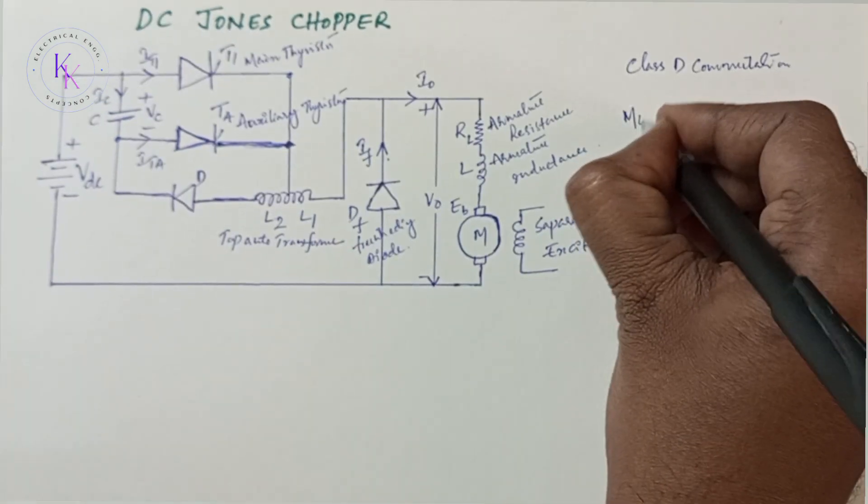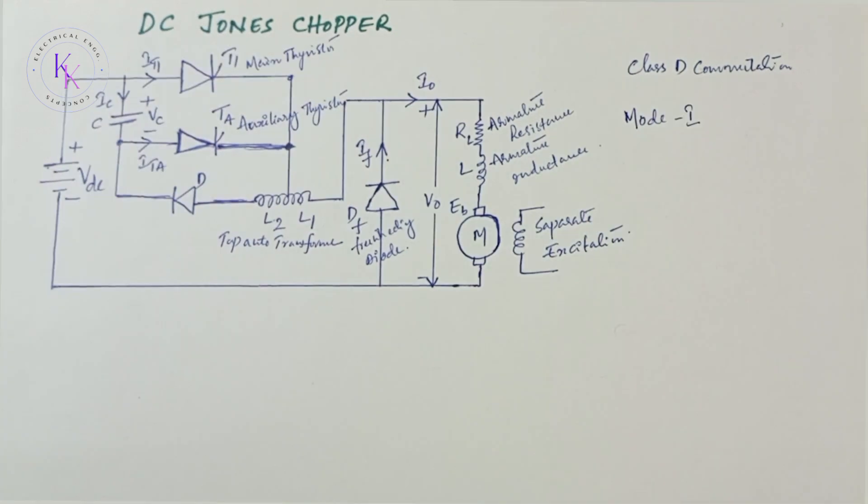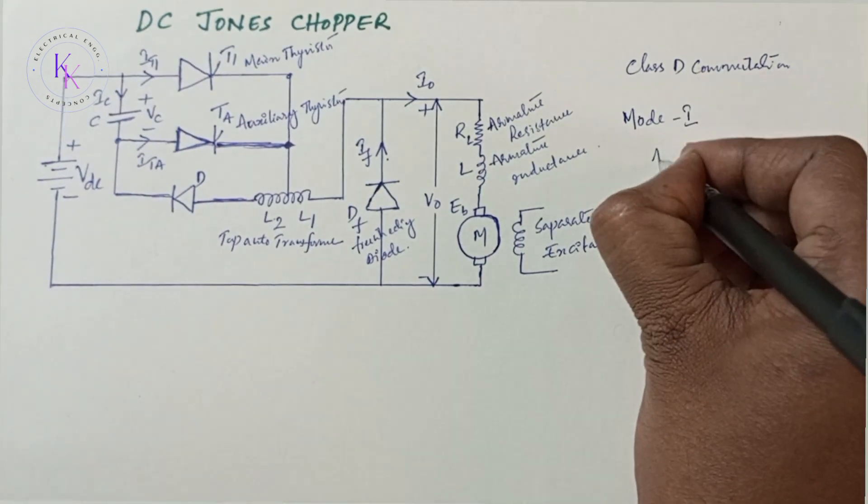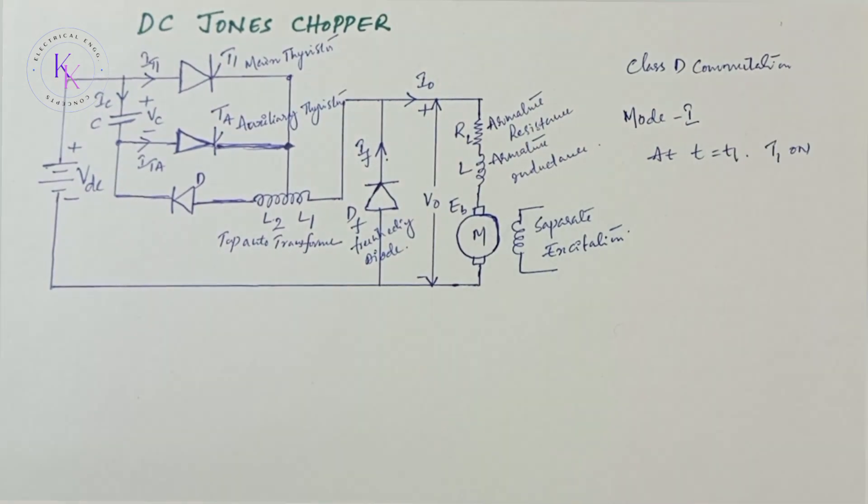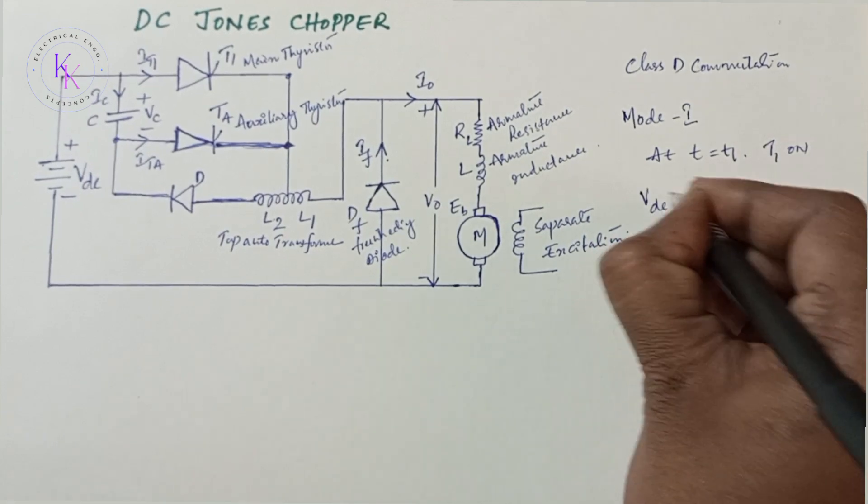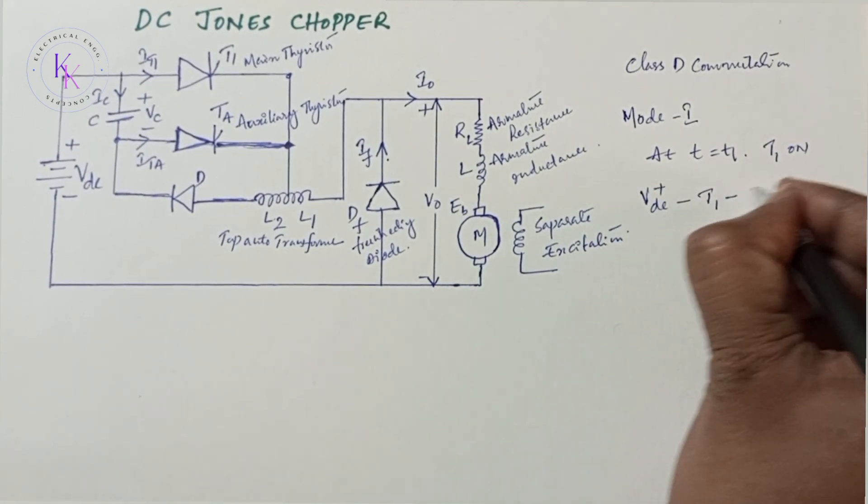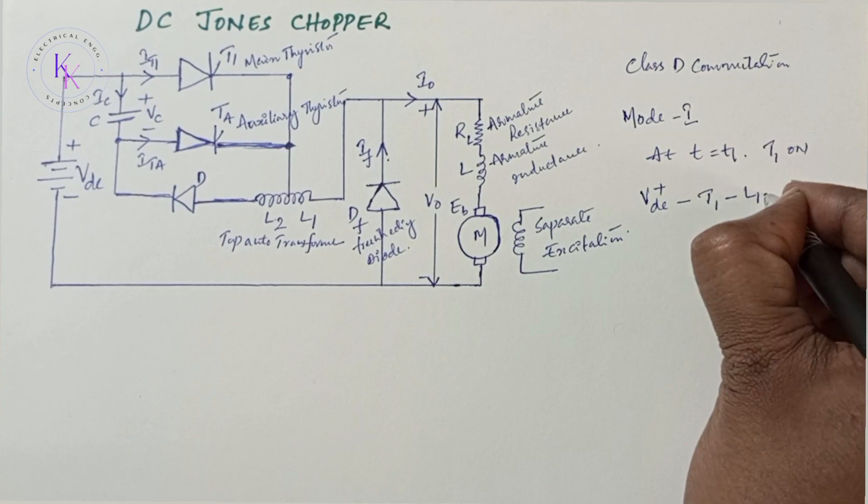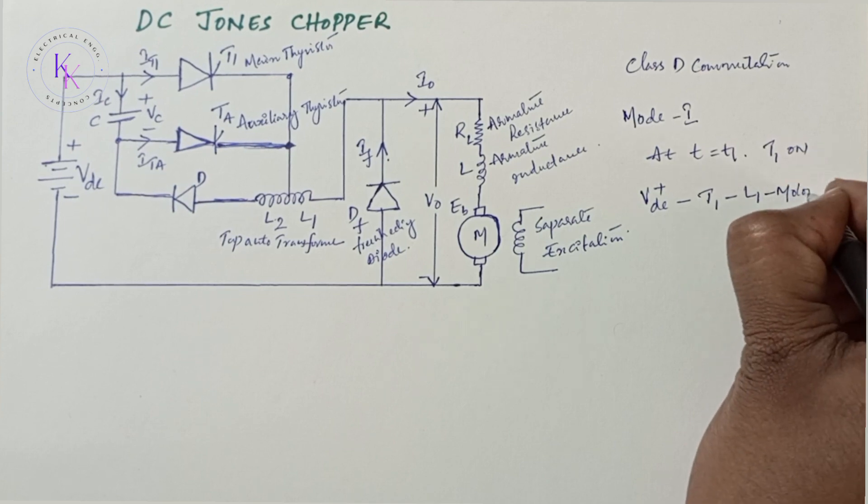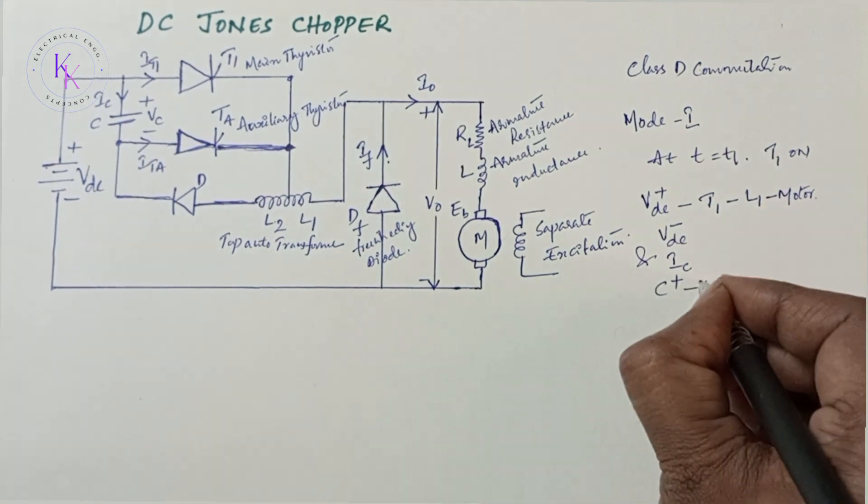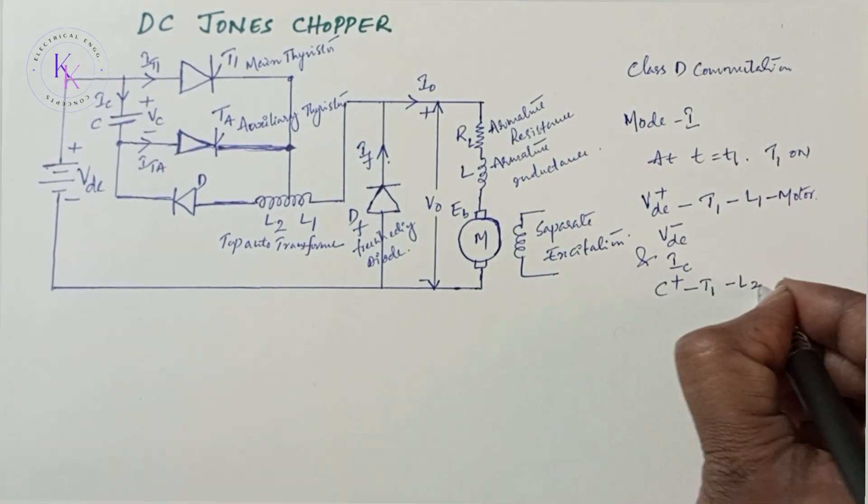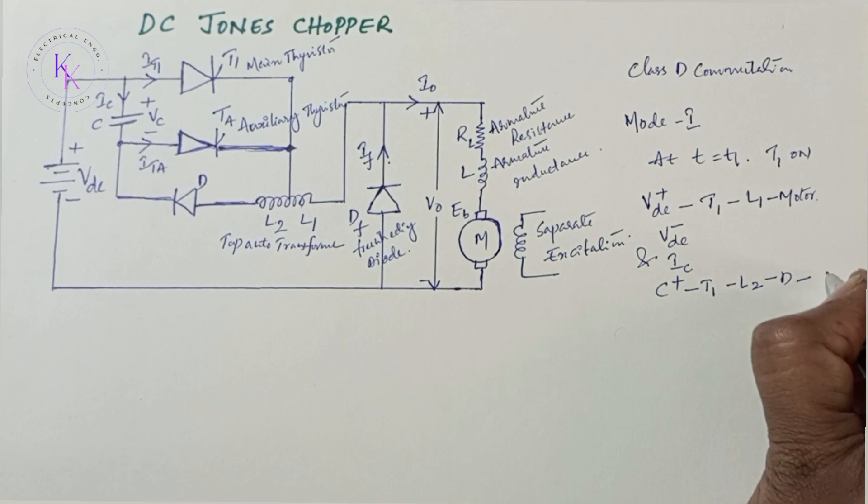Mode 1: the main thyristor T1 is fired at time T equals T1 and the load current flows through VDC plus to thyristor T1 to L1 to the motor back to VDC negative. The capacitor C discharges current IC through C plus, T1, L2, D back to C minus.